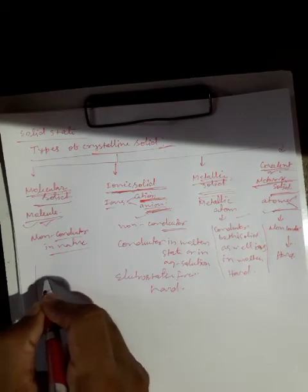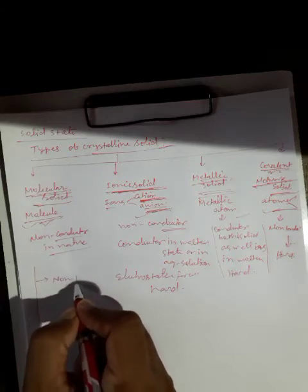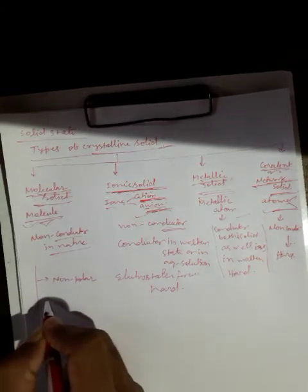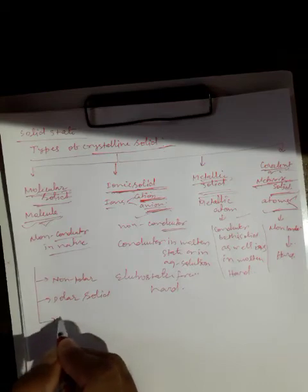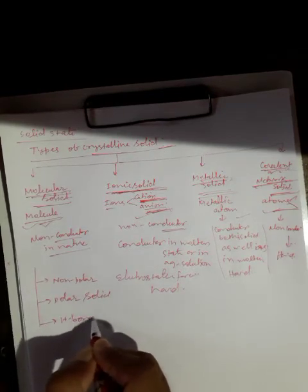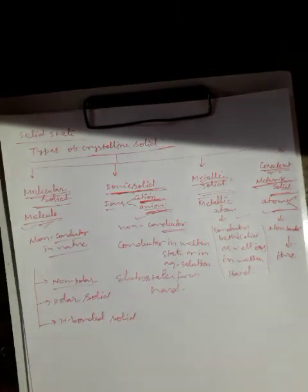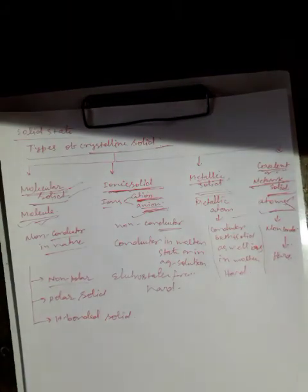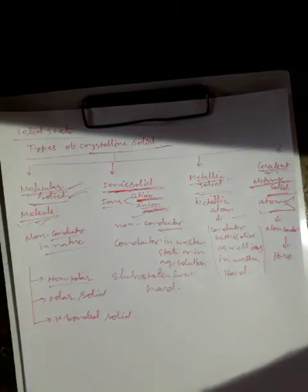Molecular solids are further classified into three types on the basis of the nature of the bonding between the constituent particles of the molecules present in the molecular solid: non-polar solids, polar solids, and hydrogen bonded solids.